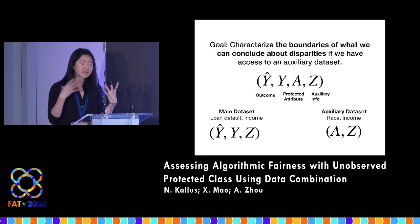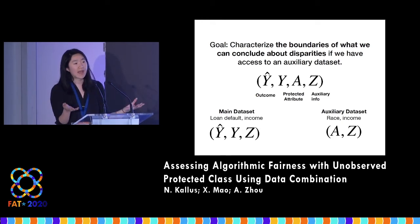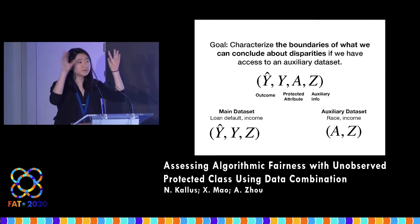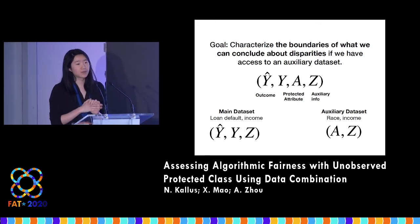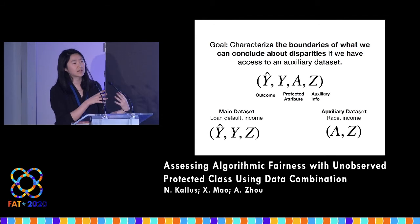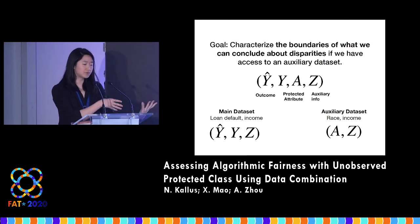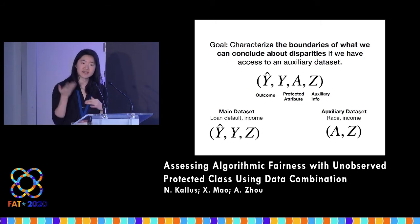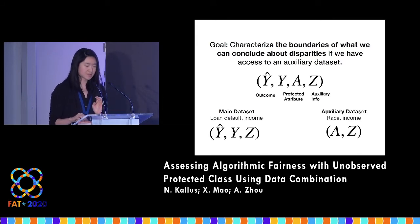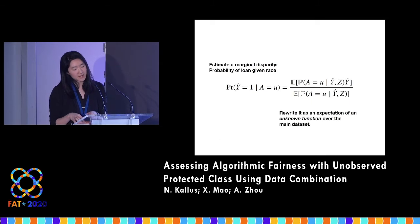We're going to model this approach by assuming that the data generating process comes from a joint distribution on outcomes Y-hat and Y. We want to consider the classification setting where Y-hat is some decision, Y is some true outcome, A is some protected attribute, and Z is auxiliary information. However, we only have access to two partial views of this information. In the lending example, we have data on outcomes and auxiliary information — such as loan default and income — and we have access to an auxiliary data set, which is our census file containing demographic information on race by income or other characteristics.